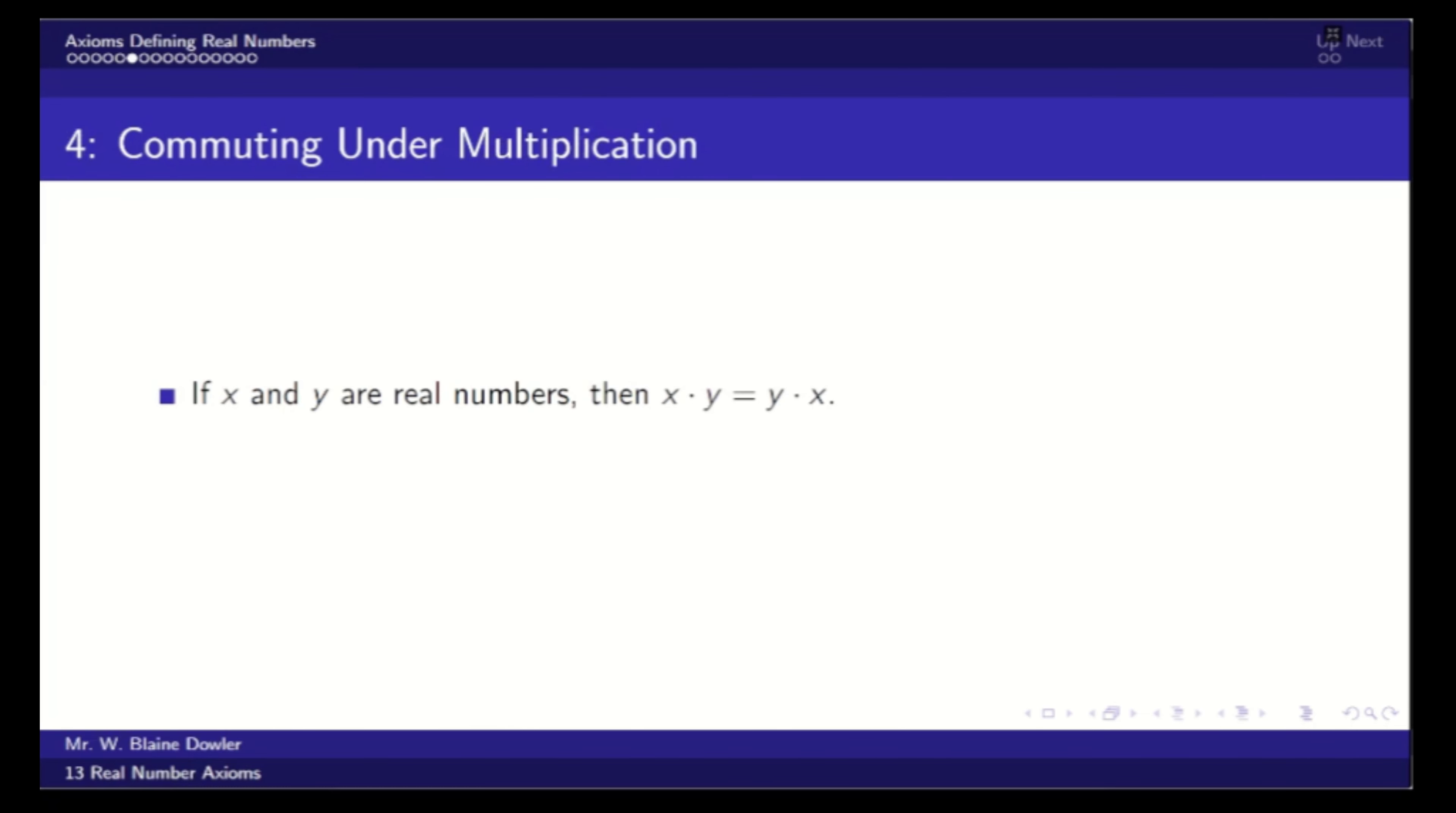Axiom number four, commuting under multiplication. So if we are multiplying two numbers, it doesn't matter in which order we multiply them. Two times three equals three times two. They're both six.